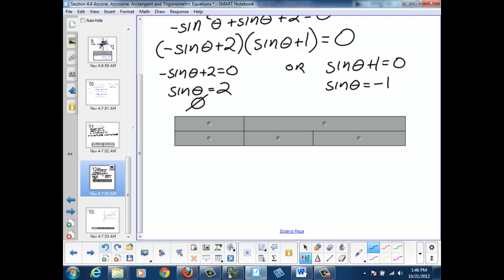So for the sine theta equals negative 1, we will apply the arcsine technique. If the sine theta equals negative 1, then theta equals the arcsine of negative 1.